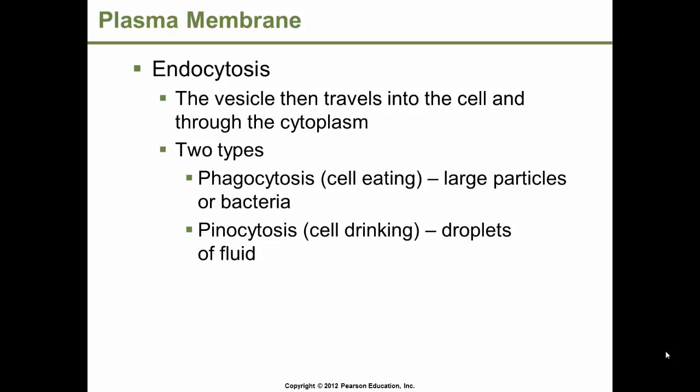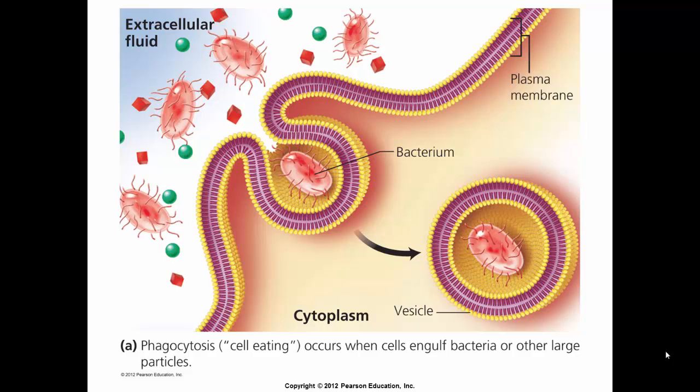There are basically two types of endocytosis: phagocytosis and pinocytosis. Phagocytosis is cell eating — this would involve substances such as large particles or bacteria — whereas pinocytosis stands for cell drinking, involving droplets of fluid. In phagocytosis, the cell engulfs bacteria or other large particles. You can see the bacteria in the extracellular fluid coming up to the plasma membrane, being enclosed, and the plasma membrane pinches off, taking the vesicle within the cell. The bacteria is enclosed within this vesicle, which is basically just the plasma membrane that has been pinched off and wrapped around the bacterium.